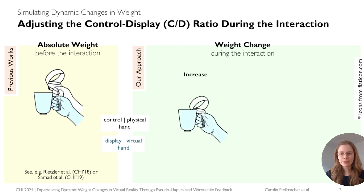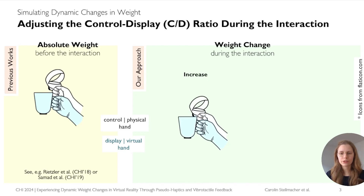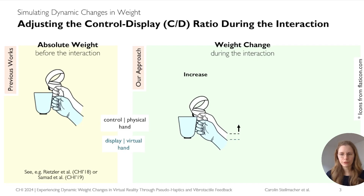For example, the increasing weight of a mug being filled with water triggers a slight negative displacement on the y-axis. Our expectation is that users will subconsciously compensate for the displacement through an upward movement of their arm to secure the lift of the virtual hand and the virtual mug. A higher arm posture means more strain on the muscles and might induce a pseudohaptic illusion of a growing weight.